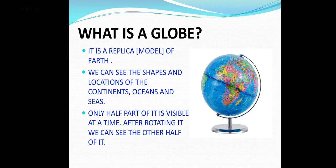In a common or a simple language, we can say it is a replica. Replica means model of the earth. Globe is a replica of earth. We can see the shape and location of the continents, oceans and seas through globe.